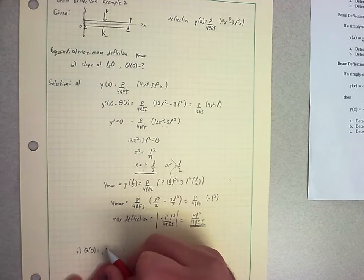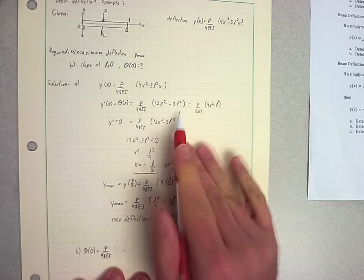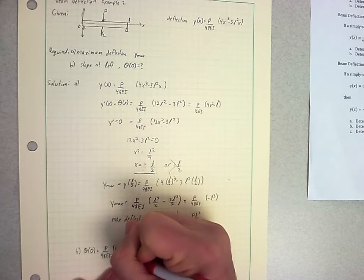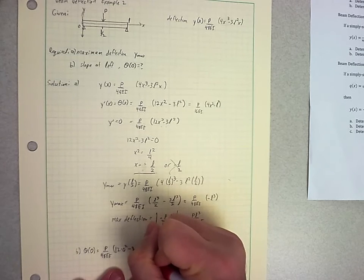Okay, so I just need to know what do I get when I take P over 48 EI times 12X squared minus 3L squared and plug in 0. So 12 times 0 squared minus 3L squared.